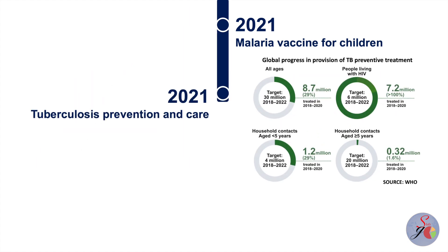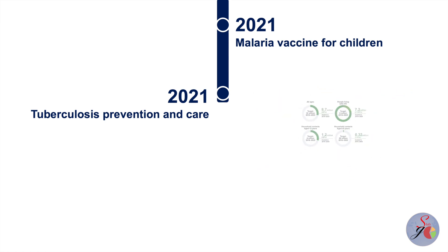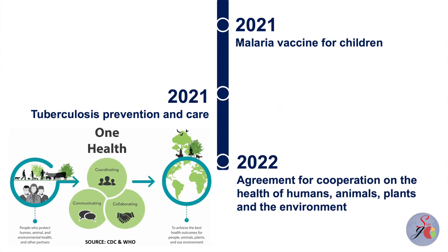By the end of 2021, more than 74 million lives had been saved through tuberculosis prevention, diagnosis and treatment since 2000. Four international agencies — the Food and Agriculture Organization, the World Organization for Animal Health, the UN Environment Programme, and the World Health Organization — signed a groundbreaking agreement in 2022 to strengthen cooperation to sustainably balance and optimize the health of humans, animals, plants and the environment, reinforcing national and regional health systems and contributing to global health security.